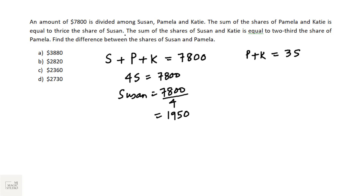The sum of shares of Susan and Katie equals two-thirds of Pamela's share. We know S = 1950, and P + K = 3 × 1950 = 5850.